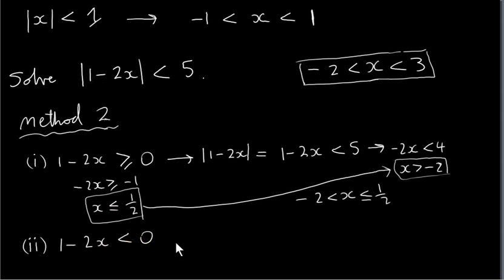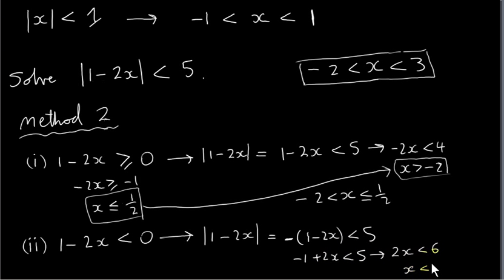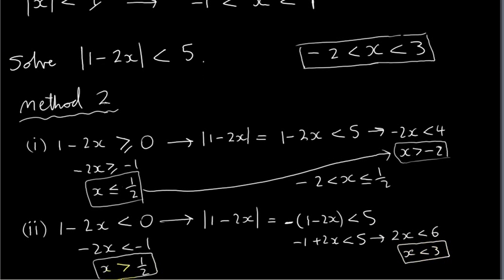Now let's look at the second case, where one minus two x is negative. If that's true, the modulus of one minus two x is got by changing its sign — we stick a minus sign in front of it to make it positive. So we solve the inequality minus one minus two x less than five. Taking the minus sign in gives minus one plus two x less than five, so two x is less than six, meaning x is less than three. But this is subject to the constraint that one minus two x is negative, which means x is greater than a half. Combining gives a half less than x less than three.